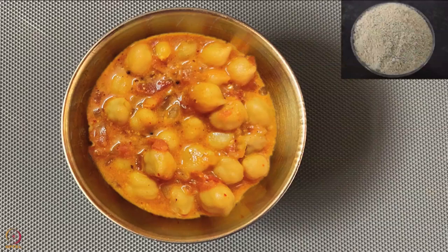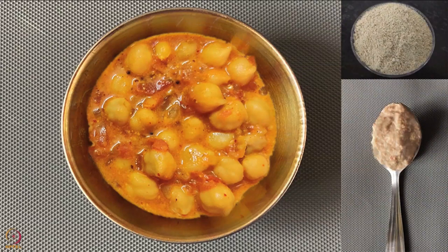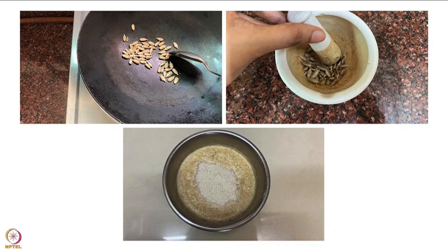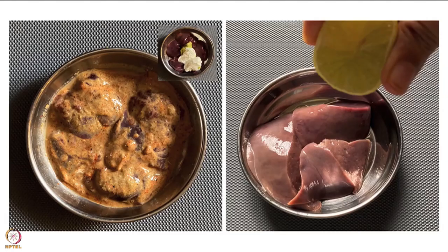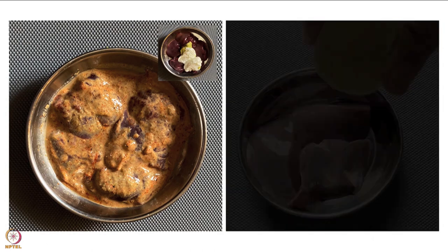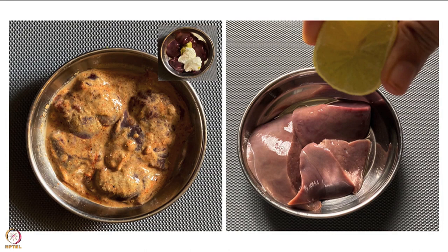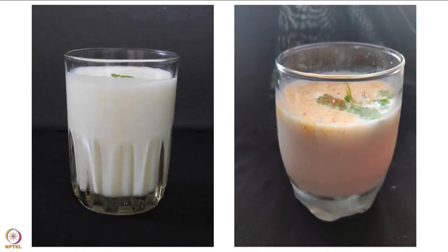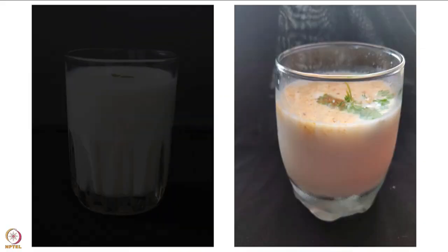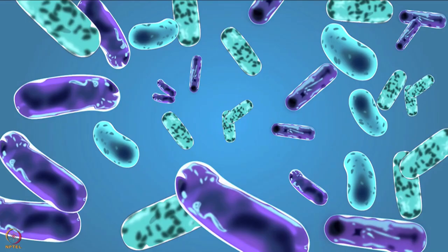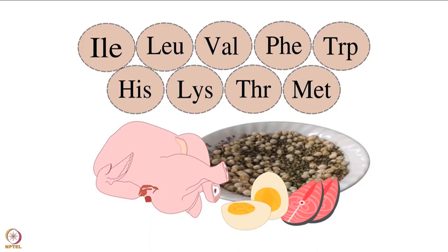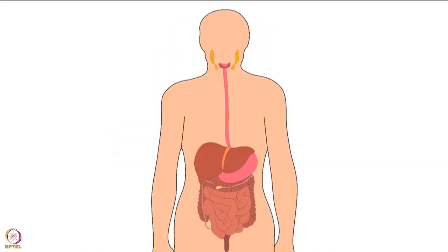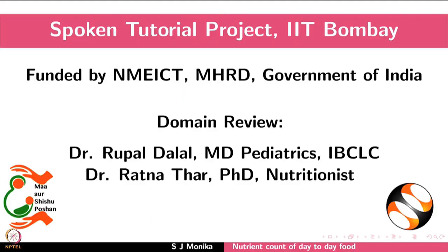For example, adding seeds and coconut paste to chickpea curry. Adding roasted seeds powder in idli batter is another example. It is also advised to apply curd or lemon to non-vegetarian food. It adds flavor and makes the meat tender. It is also suggested to include lassi or buttermilk with your meals. This will enhance probiotics, protein and calcium in your meals. It also aids in digestion. This brings us to the end of this tutorial. Thanks for joining.